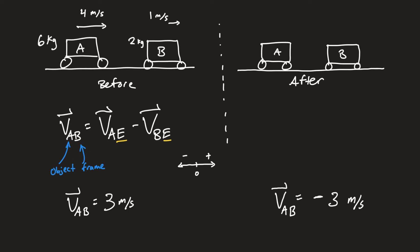Now let's turn this into the notation we use in the context of collisions. Right now I'm using relative velocity notation with the earth's frame of reference, but when we do this calculation in collision problems we don't need to explicitly reference that. I'll show the formal version first, and then we'll simplify.